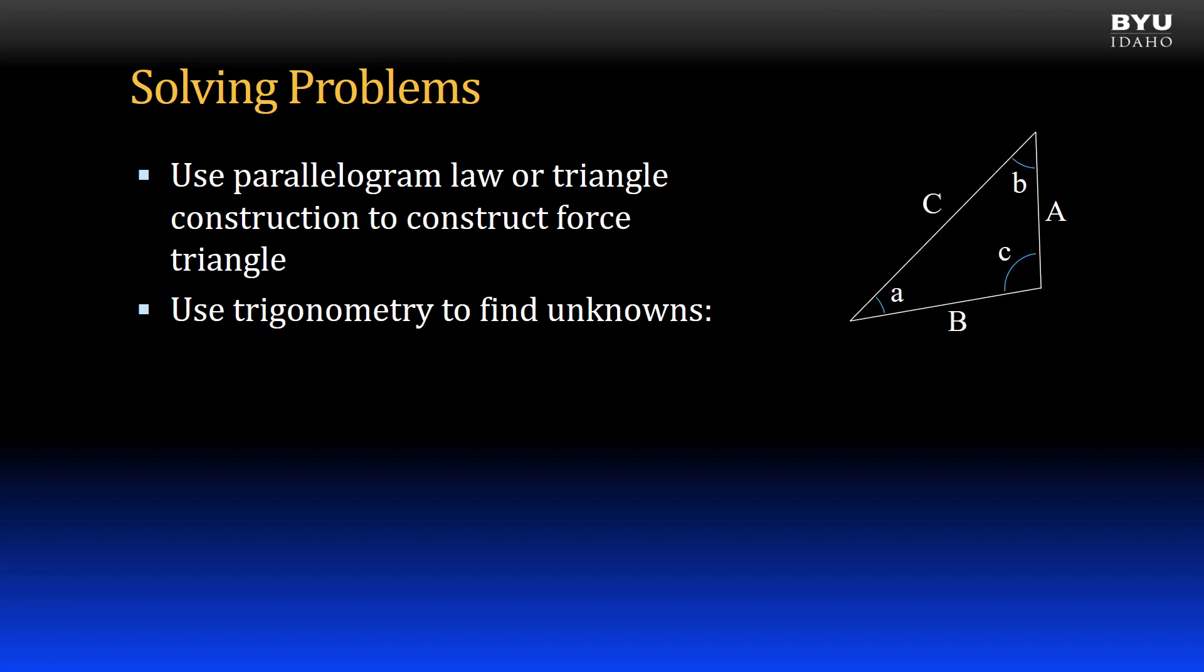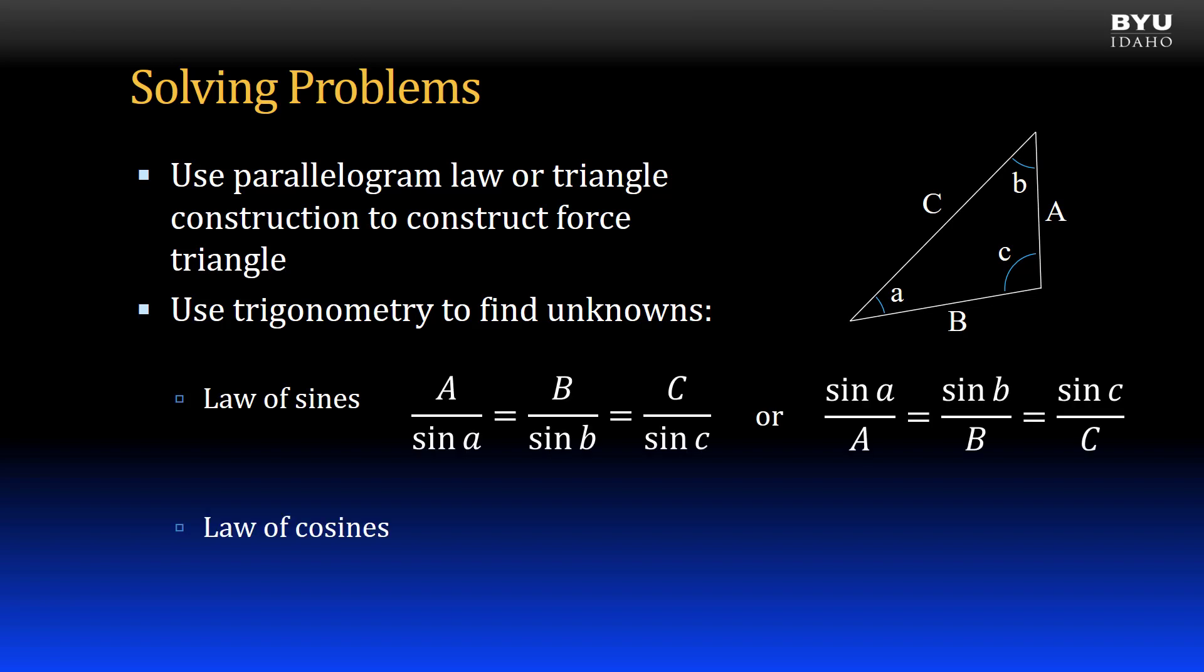If we have a general triangle, we need to have at least three pieces of information known before we can solve for the remaining unknown pieces. There are two basic tools we are going to use: the law of sines and the law of cosines. The variables in the equations refer to the triangle figure shown.